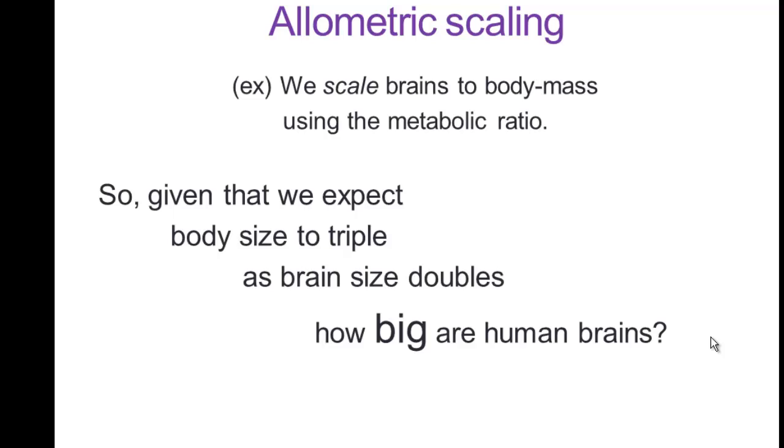And this is important because, for example, small mammals have much higher metabolisms than big mammals. Small mammals have faster heartbeats than big mammals. Small mammals have shorter life expectancies than big mammals. So a lot of things change allometrically as we change the size of a mammal.